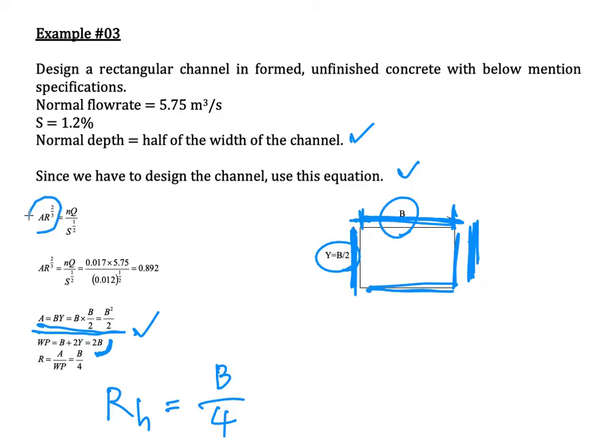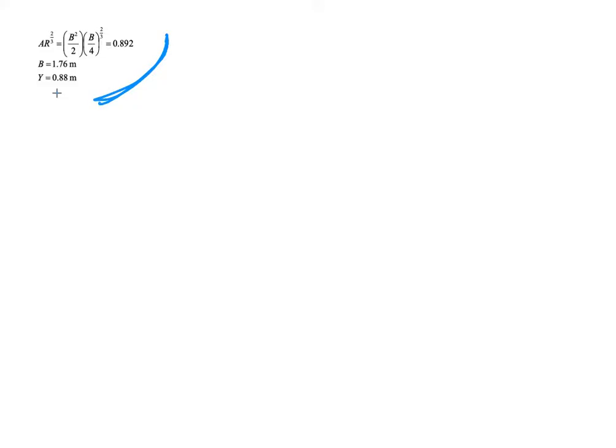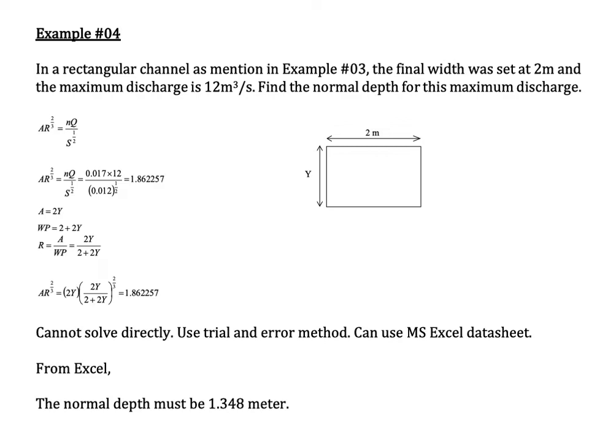Substituting all values into the left-hand side expression and solving, we get b equals 1.76 meters and the depth y equals 0.88 meters. In this case, the equation could be solved directly. However, normally in this topic you need to use trial and error, because y is simply half of b in this particular problem.